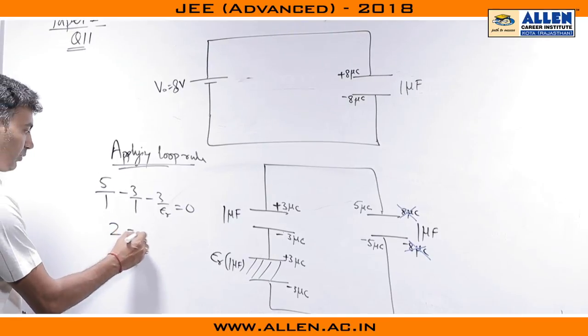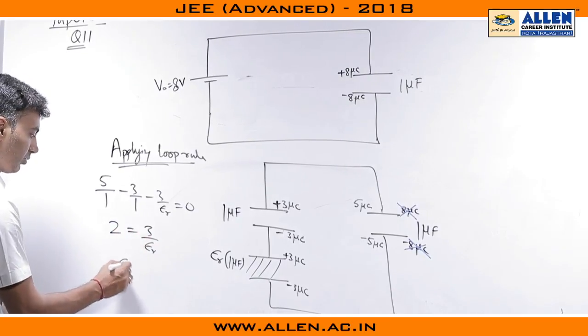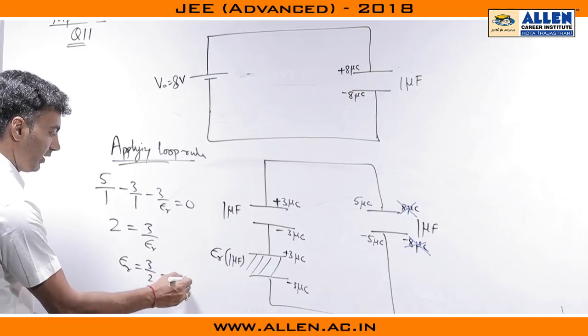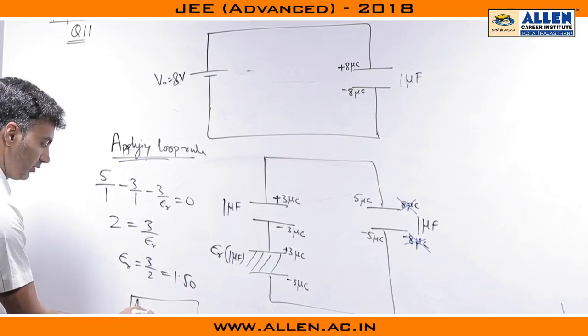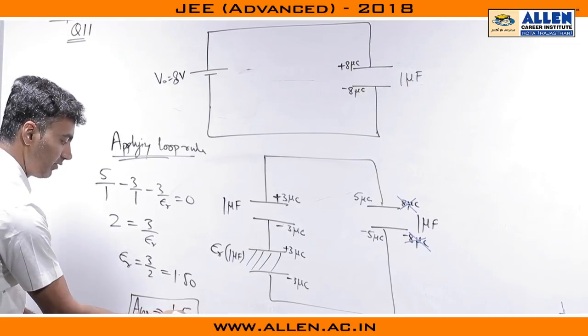This gives us 2 equals 3 by epsilon r, or epsilon r is 3 by 2, or 1.50. That was also supposed to be the final answer: 1.50.